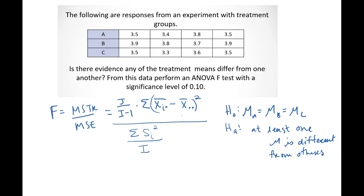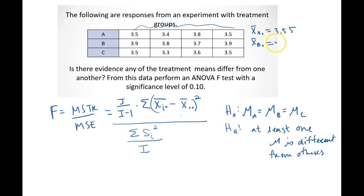The first thing we should do is calculate the individual group means. The mean of treatment A — X-bar A dot — is the average of 3.5, 3.4, 3.8, and 3.5, which equals 3.55. For treatment B, X-bar B dot equals 3.825. For treatment C, X-bar C dot equals 3.475. The dot notation means we are averaging over J, the number of observations, within that treatment group.